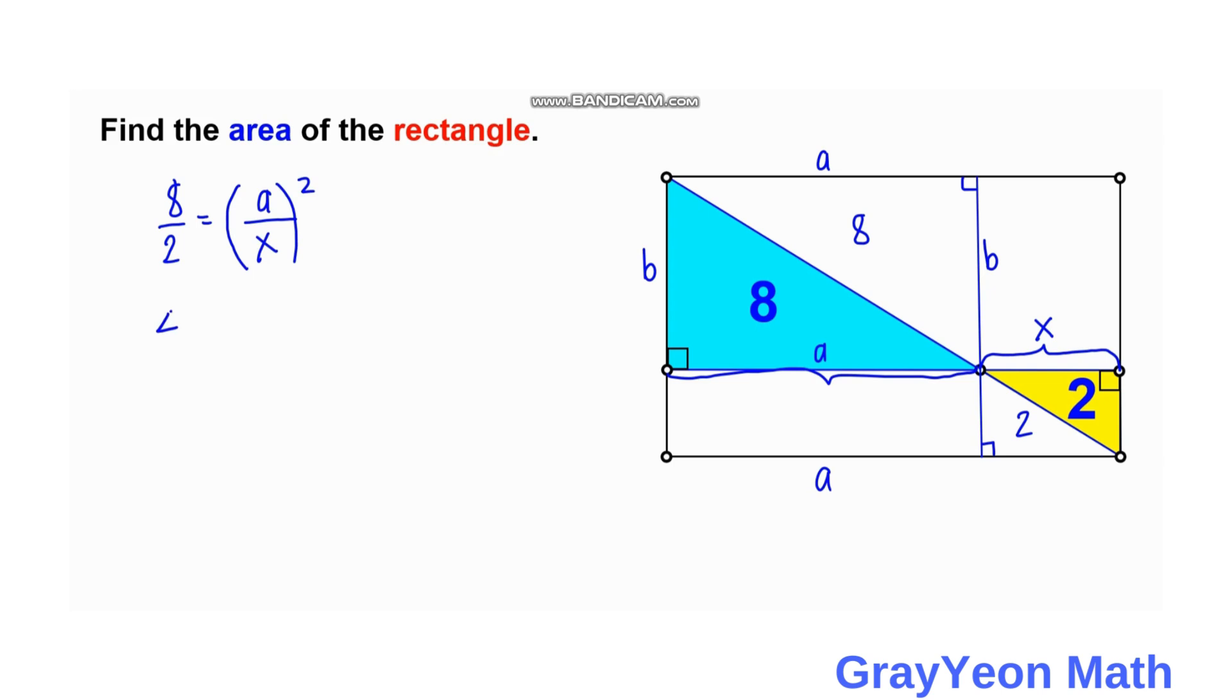So 4, 8 over 2 is 4, is equal to A over X squared. And if we take the square root of both sides, so we have 2 is equal to A over X. And which suggests that by cross multiplication, A is equal to 2X.